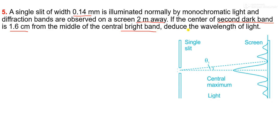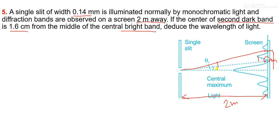So 1.6 cm is the distance from the center to the second dark band, and 2 meters is the screen distance. This angle becomes theta. Using the formula angle equals arc upon radius, theta equals 1.6 centimeters, which is 1.6 into 10 to the power minus 2 meters, upon 2 meters.